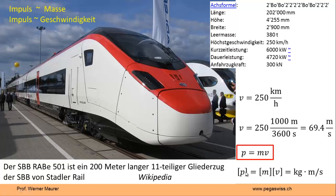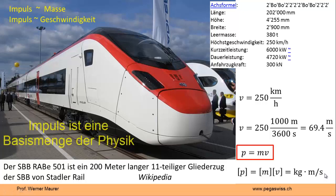Zu den Einheiten: Wir nehmen die Einheit des Impulses. Dazu machen wir eckige Klammer um das Formelzeichen. P für Impuls hat die Einheit von Masse, also Kilogramm, mal Einheit der Geschwindigkeit, Meter pro Sekunde. Das ist keine schöne Einheit für eine Grundgröße der Physik. Denn der Impuls ist eine Grundgröße der Physik, so wie Masse, elektrische Ladung usw.